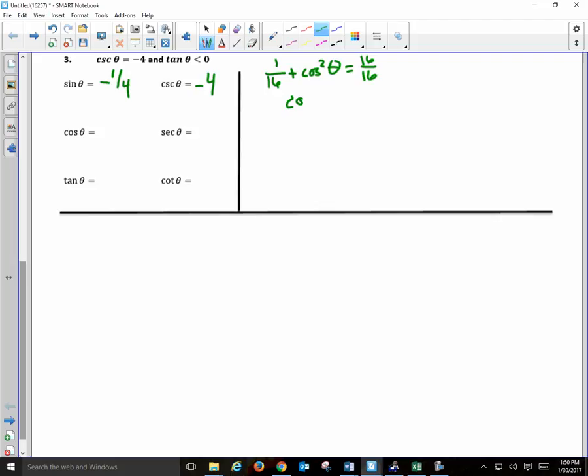I subtract, and I get cosine squared is equal to 15 over 16. Square it. Cosine theta is equal to plus or minus the root of 15 over 4. Quadrant. Sine, positive or negative? It's negative. So which quadrants is sine negative in? 3 and 4. Tangent, positive or negative? It's less than 0, so it's negative. Where is tangent negative? 2 and 4. So which is the quadrant that we're working in? Fourth quadrant. In the fourth quadrant, cosine and secant are positive. But sine and tangent are negative.